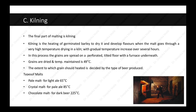The last part of the malting process is kilning — the heating of germinated barley to dry it and develop flavors. The malt goes through high temperature drying in a kiln (your bhatti), with a gradual temperature increase. The grains are spread on a perforated tilted floor with a furnace underneath and dried at 49 degrees Celsius. The extent of heating depends on the type of beer: pale malt is heated at 65°C for light ale; crystal malt at 85°C for pale ale; and chocolate malt is kilned at 225°C for dark beer.